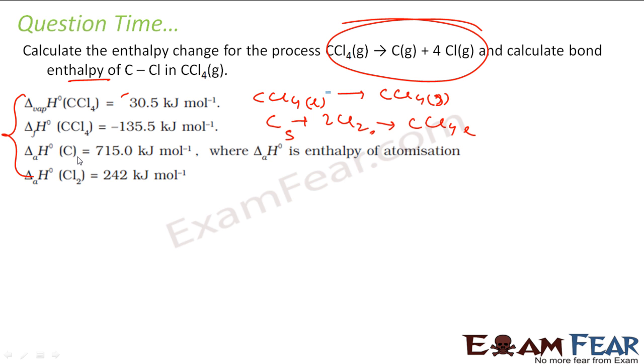Next is, you have carbon solid, you want to convert this to gas, convert solid to carbon gas, and that is 715.